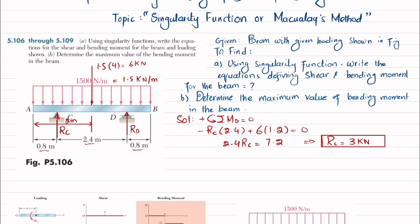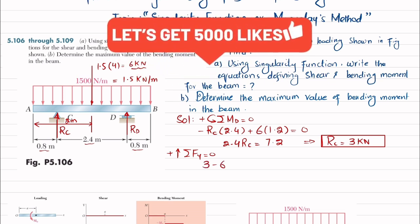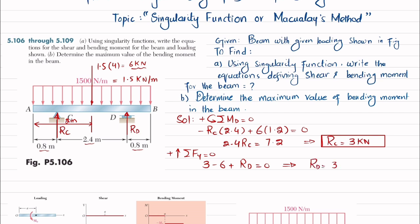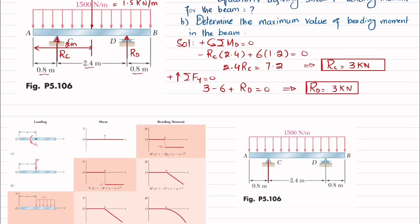Now we find RD using the equation: sum of all forces along the y-direction must equal 0, with upward force taken as positive. RC is upward 3, minus 6 kilonewton downward, plus RD equals 0. From here RD is also equal to 3 kilonewton. So RC equals 3 kilonewton and RD equals 3 kilonewton.